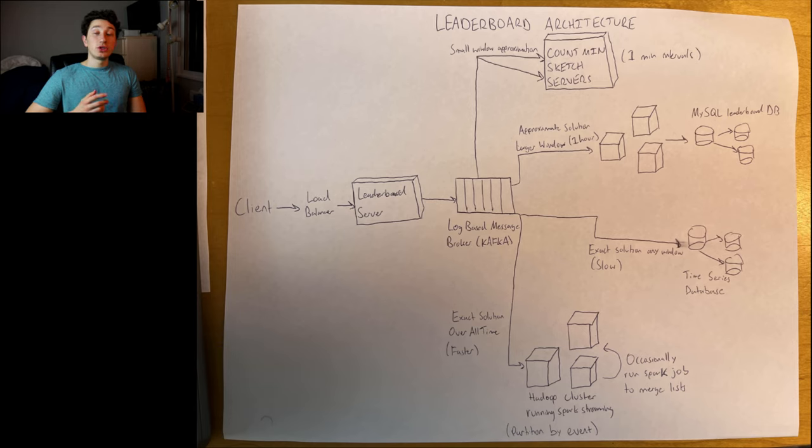Let's start with the bottom solution first — the baseline: an exact leaderboard over all time. All events are sharded by event ID, every node in the Hadoop cluster running Spark streaming keeps a localized count of all elements it's seen, and then occasionally you run a Spark job to merge those lists into one list of size K and place that into some cache or database. The second possibility is if we want an exact solution over any time window, at the cost of being slower — here, instead of ingesting into a stream processing consumer, we just ingest into a time series database and run batch jobs or on-demand server calls for aggregations.